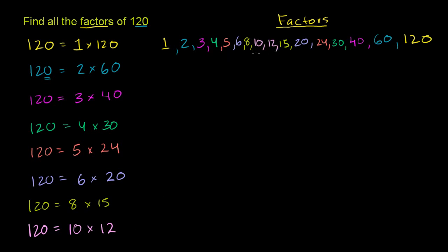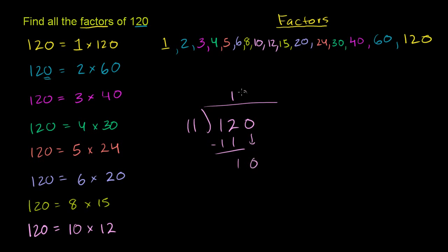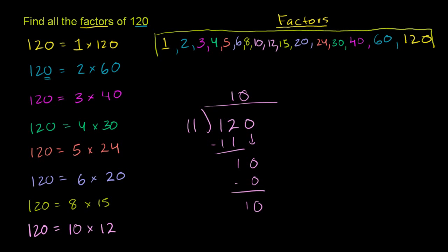We don't have to go above 11, because we already went through 12 going in descending order, so we've filled in all the gaps. Let's try 11 anyway: 11 goes into 12 one time; 1 times 11 is 11; subtract; bring down the 0; 11 goes into 10, 0 times; you're left with a remainder of 10. So 11 definitely does not go in evenly. So we have all of our factors: 1, 2, 3, 4, 5, 6, 8, 10, 12, 15, 20, 24, 30, 40, 60, and 120. And we're done.